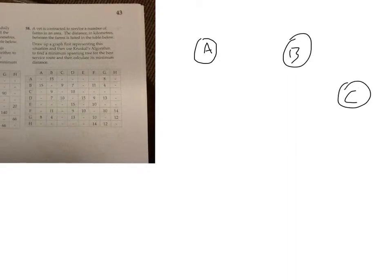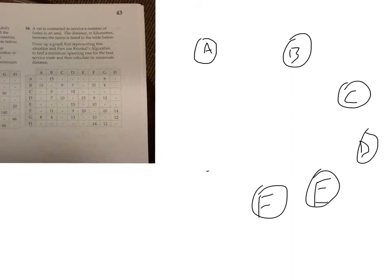I'm going to do question 58 from the worksheet. What we need to do is use these distances to make a network and then find a minimum spanning tree. So first we'll place the nodes — it doesn't matter where these go — we've got A, B, C, D, E, F, G, H.